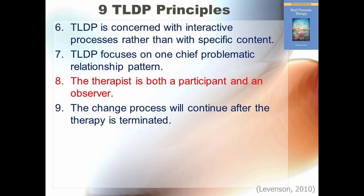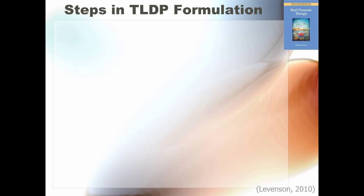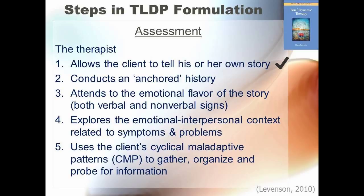Here are 13 steps that encompass three important categories in TLDP, starting with assessment. The therapist allows the client to tell his or her own story, conducts an anchored history — one that may be structured around the chief relationship pattern that will be addressed in therapy. The therapist also attends to the emotional flavor of the story, including both verbal and nonverbal signs, explores the emotional interpersonal context related to symptoms and problems, and uses the client's cyclical maladaptive patterns, or CMP, to gather, organize, and probe for information.